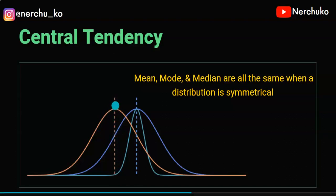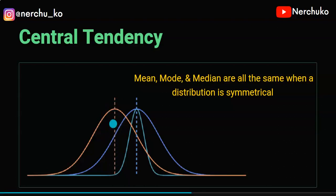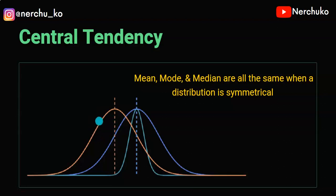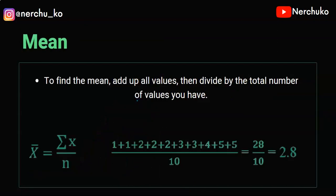Here we have a red color graph with a dotted line. This dotted line represents Mean, Median, Mode. I have a particular distribution. And the blue graph here — this blue dotted line is also Mean, Median, Mode. Next, we will discuss the Mean.